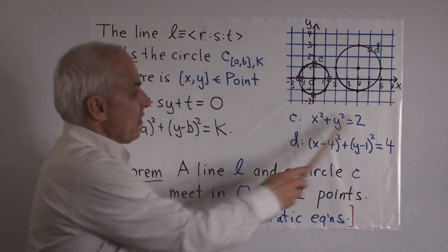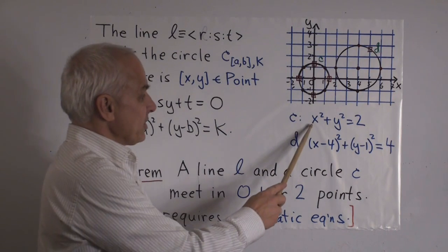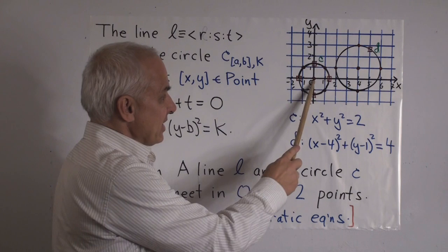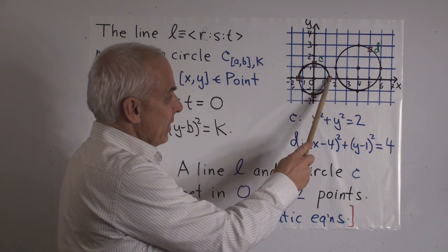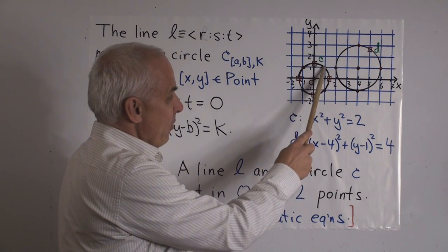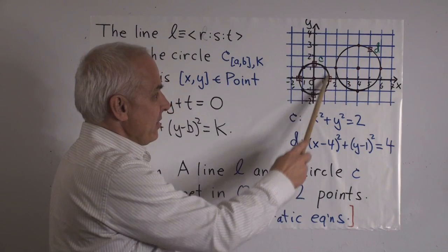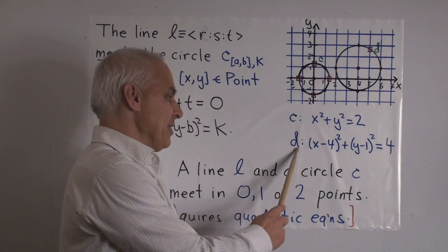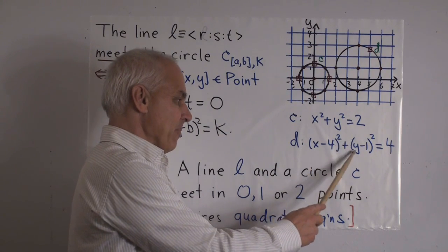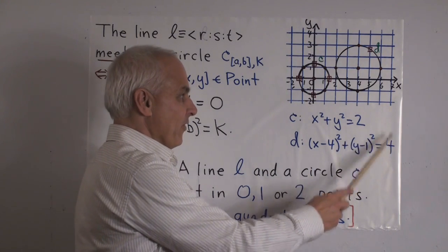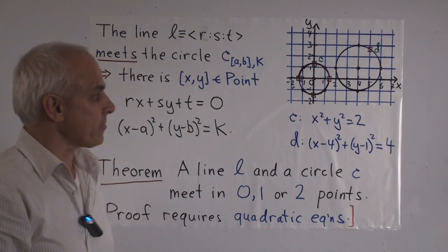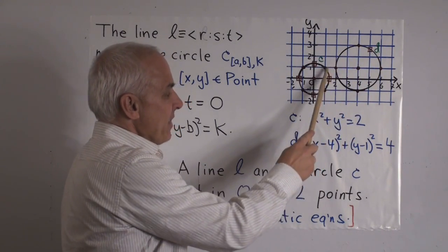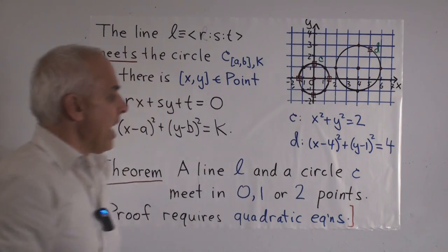In this picture here, for example, we've got two circles. There's a circle C with equation x² + y² = 2, whose center is (0,0), and goes to the point (1,1) and (1,-1). Another example is the circle D, whose equation is (x-4)² + (y-1)² = 4, which has center (4,1) right there.